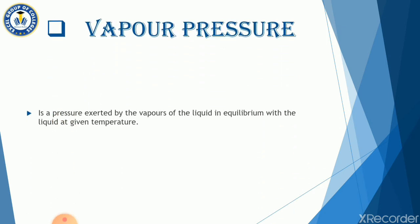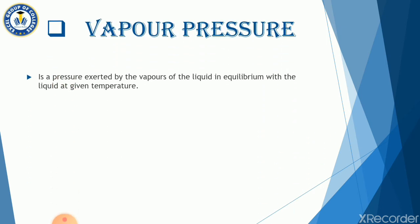Our next topic is vapor pressure. Vapor pressure is the pressure exerted by the vapors of the liquid in equilibrium with the liquid at a given temperature. One important point to remember: for evaporation, the surface must be open, whereas for vapor pressure, the surface must be closed.